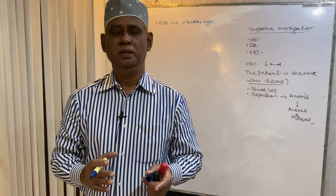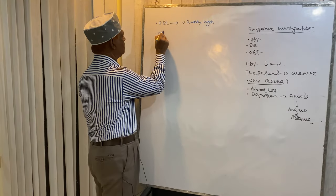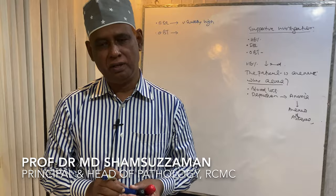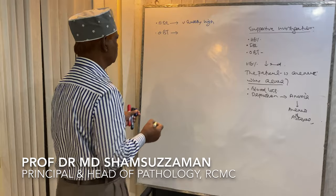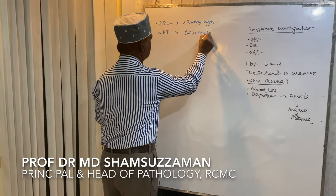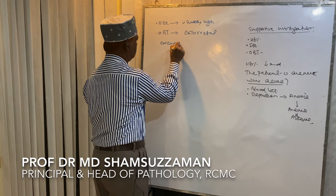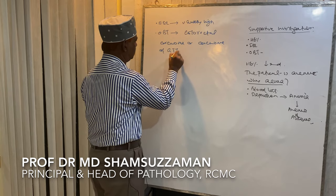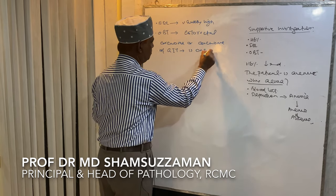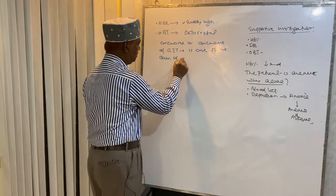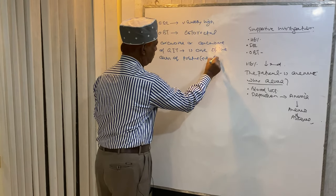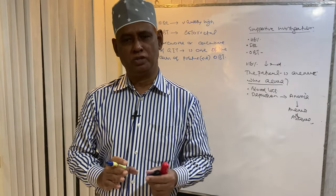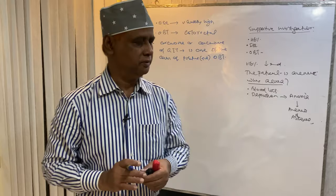ESR is similarly supportive in diagnosis. For the occult blood test, colorectal carcinoma or carcinoma of the gastrointestinal tract is one of the causes of a positive occult blood test. However, a positive occult blood test does not confirm that the patient is suffering from colorectal carcinoma — it is a supportive investigation.